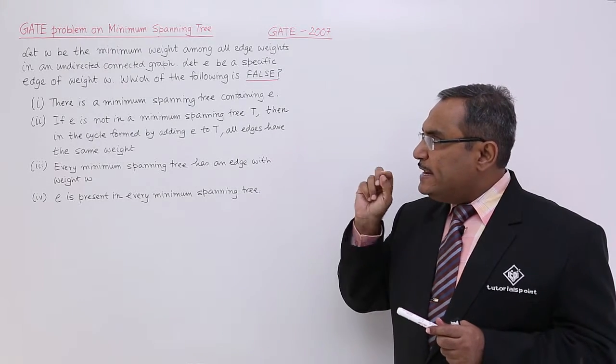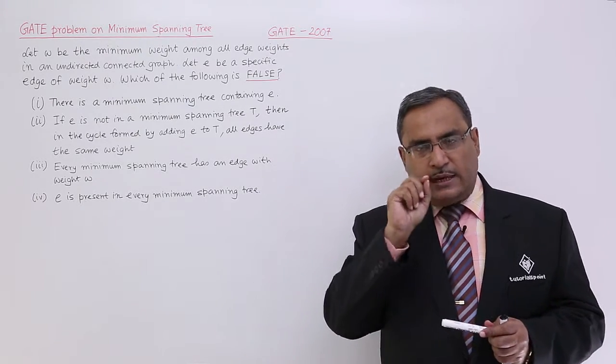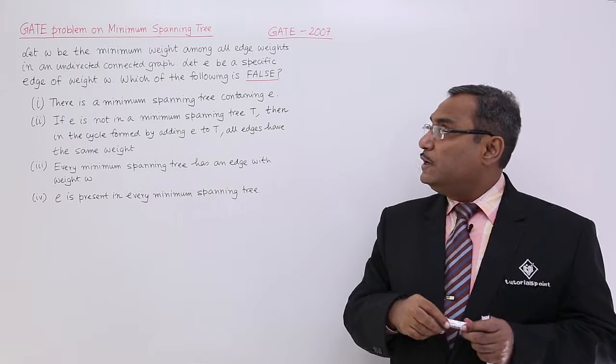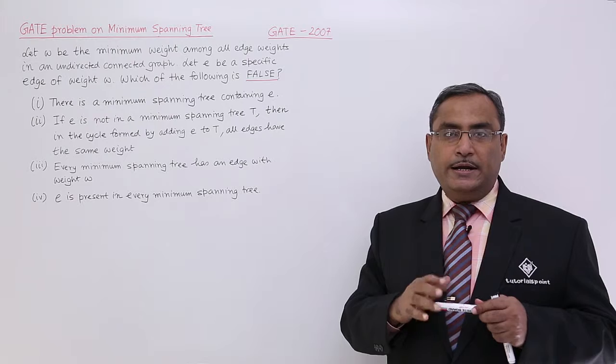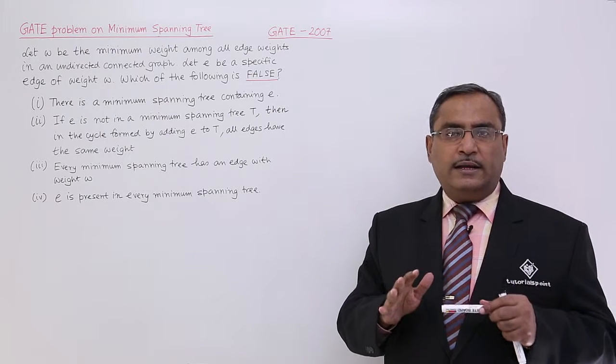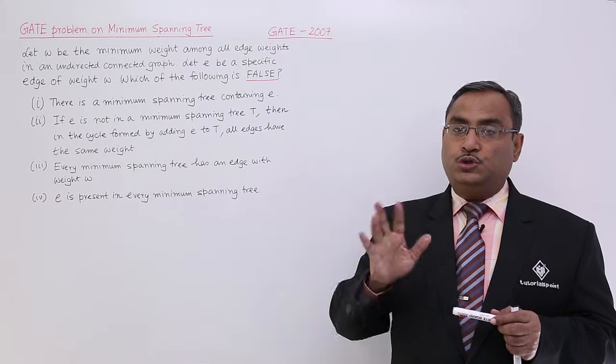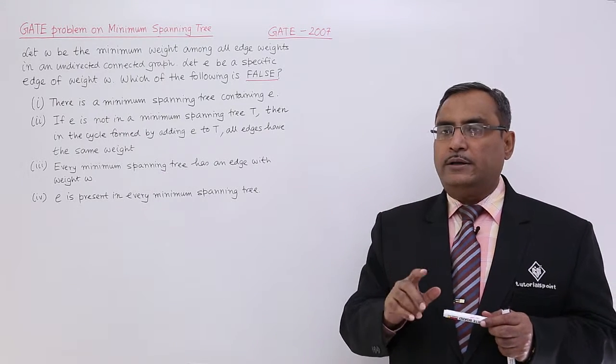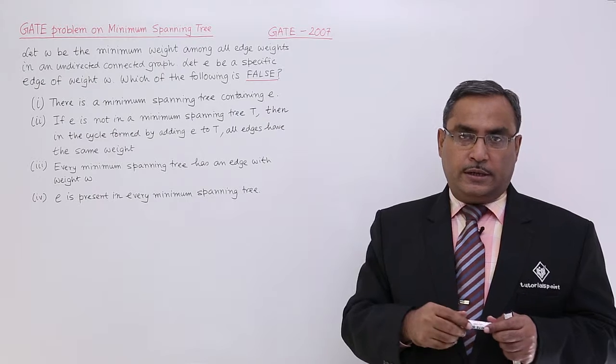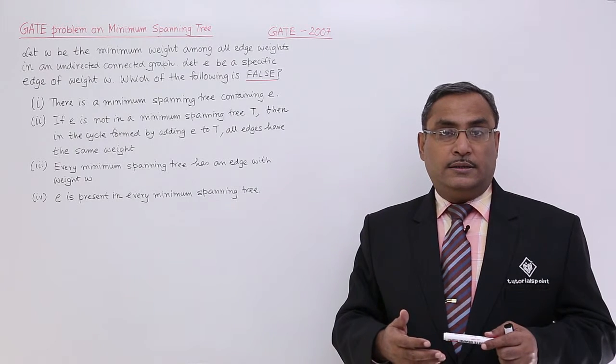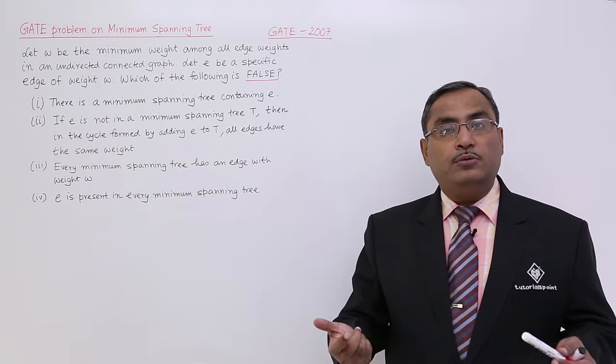W is the weight and E is that very edge which is having that particular weight W. From this particular statement, we should not infer that E is the only edge which is having the weight W. We should not make that comment because the graph may have all the edges having weight equal to W. That can also happen.